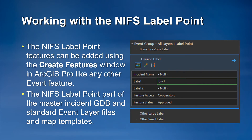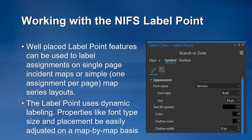Label point features within the NIFS can be constructed and placed using the Create Features window and standard editing tools within ArcGIS Pro. In that way, it is somewhat like an annotation feature class. Unlike the annotation feature class, however, the NIFS label point can sync with the National Incident Feature Service and is part of the Master Incident Geo database. In many cases, the NIFS label point feature class is now being used as a substitute for the simple assignment annotation feature classes that were once commonplace on incident maps.